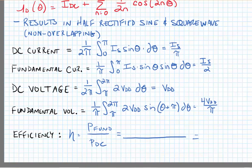Solving for the DC voltage and fundamental voltage yields a DC value of VDD and a fundamental value of 4VDD/π.